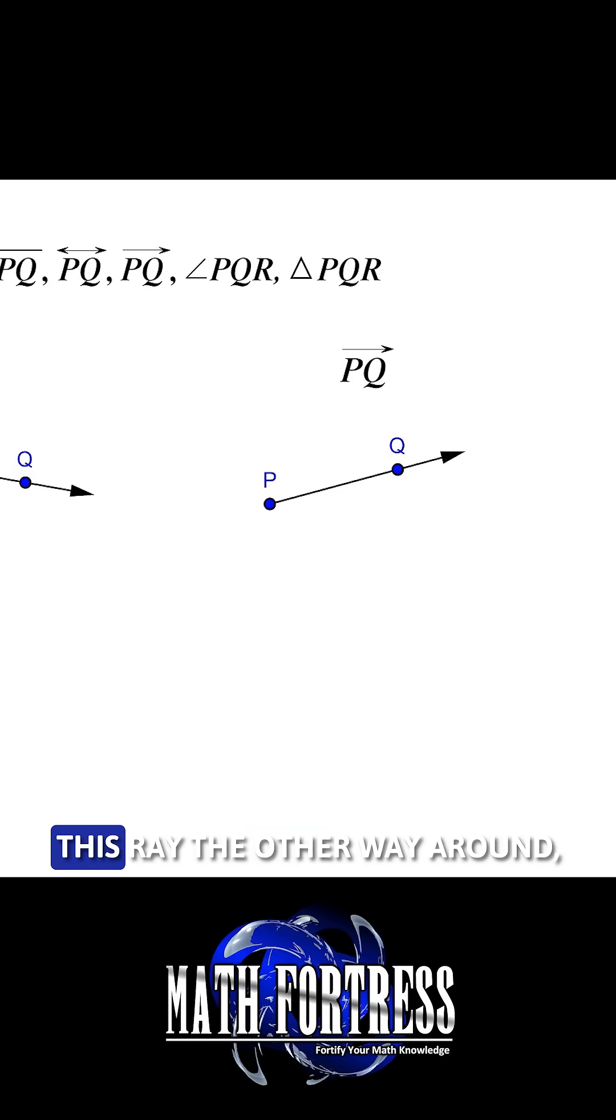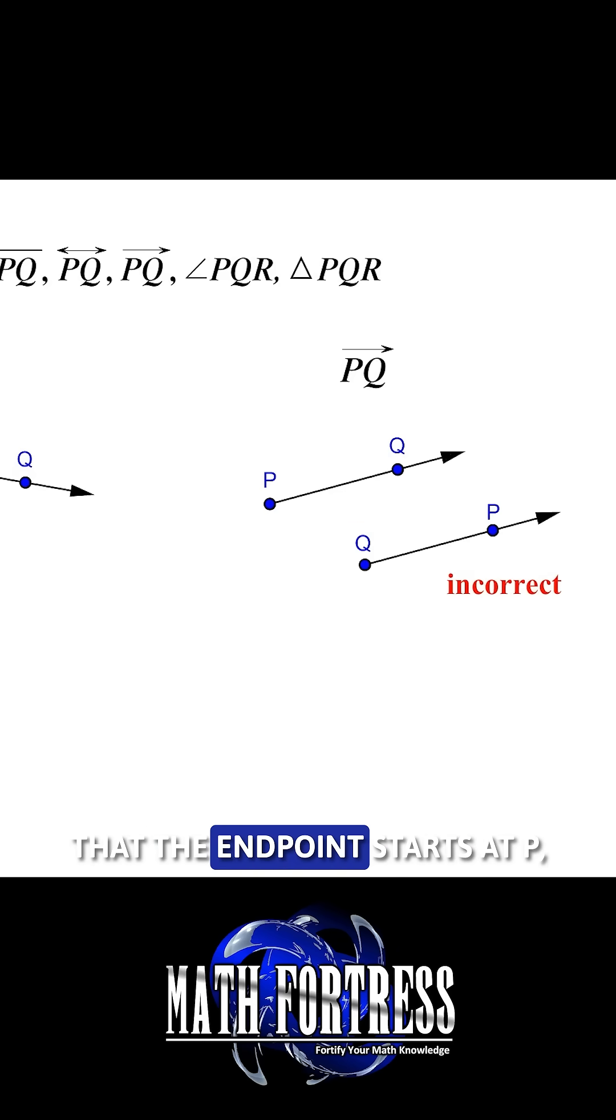It would be incorrect to draw this ray the other way around since the symbol is stating that the endpoint starts at P not point Q.